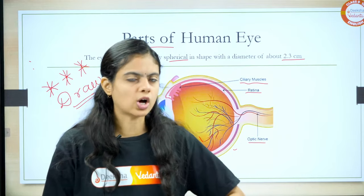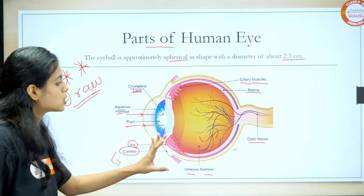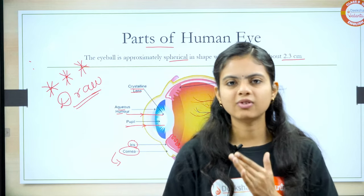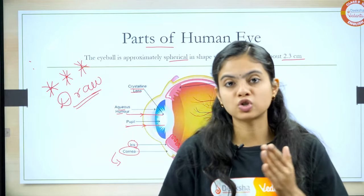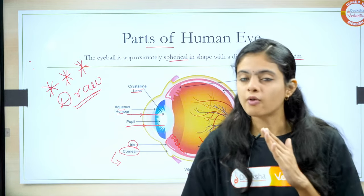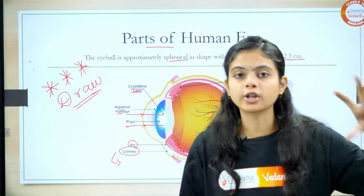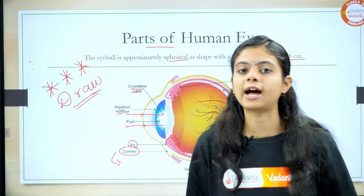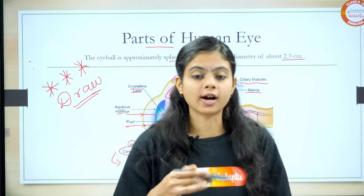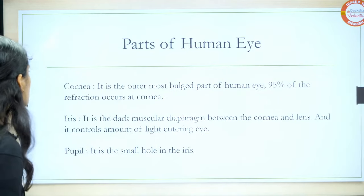So I have discussed about all the parts of the human eye. What you can do is make your notes. Prepare your own notes — put the heading 'Human Eye and Colourful World', first draw the human eye, label the parts, and below that write their functions. Now, cornea — as I said — it is the outermost bulge part of the human eye. And the interesting part: 95% of the refraction occurs at the cornea.